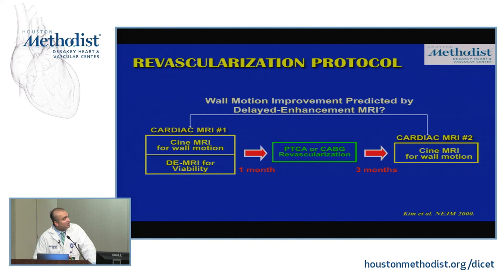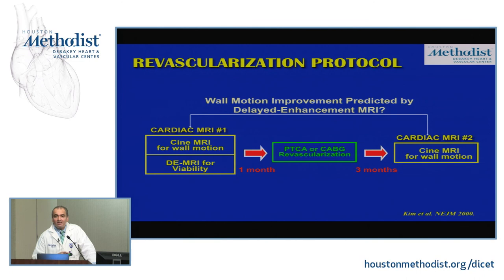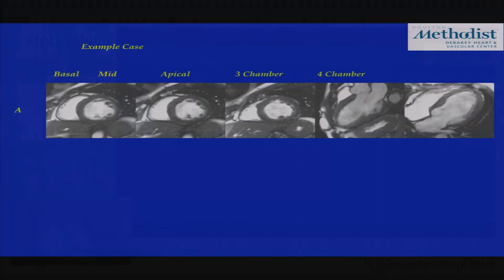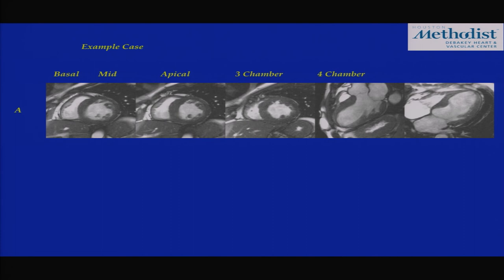The classic New England Journal publication from 2000 took patients with coronary disease scheduled for bypass or percutaneous revascularization, performed cine and delayed enhancement MRI beforehand, and brought them back about three months after revascularization for repeat cine assessment. This tested whether the pre-revascularization delayed enhancement findings could predict likelihood of improvement. An example case shows LV dysfunction with regional variation — the inferior wall almost akinetic, all segments having some level of dysfunction, and mean ejection fraction of 30%.